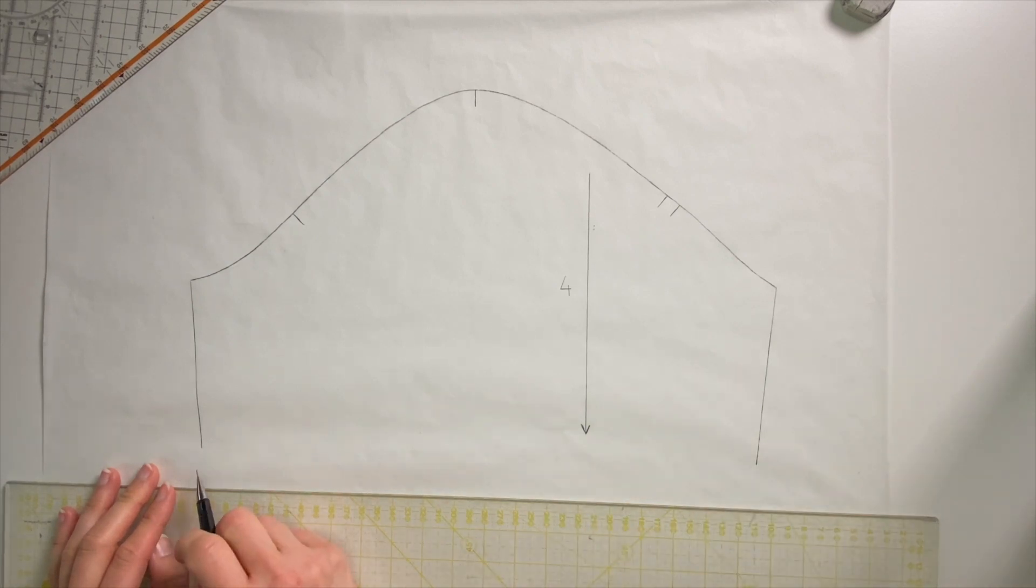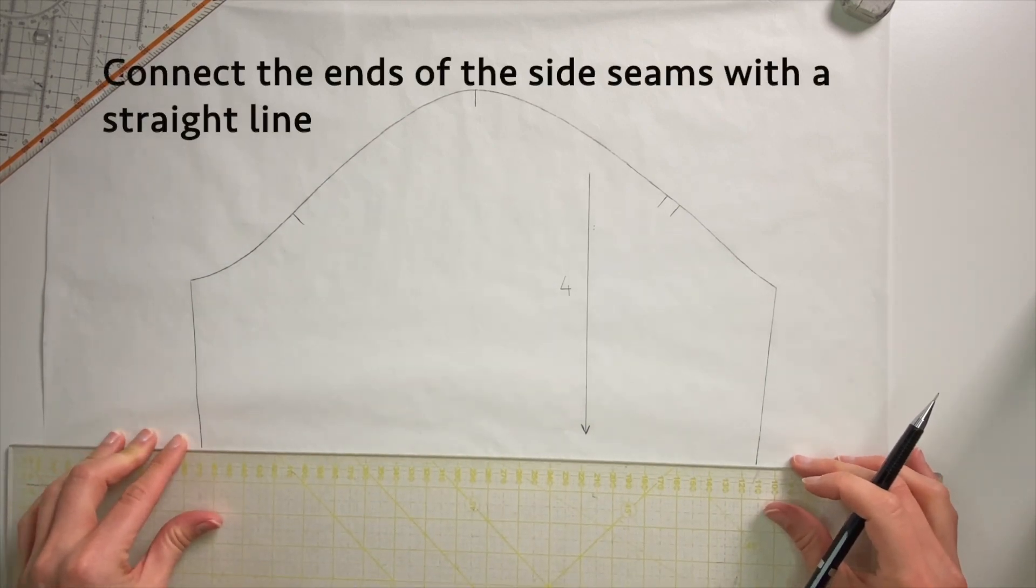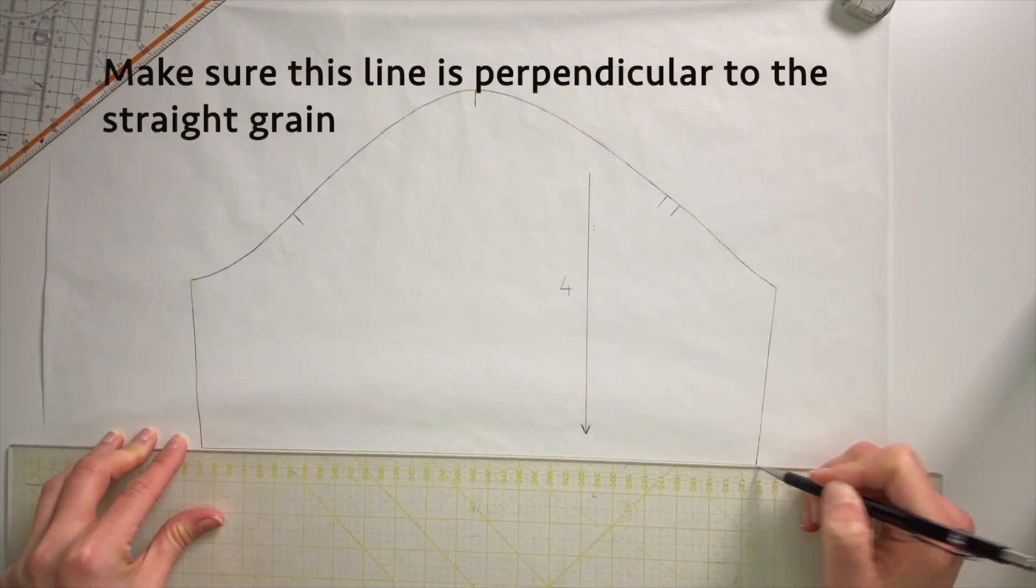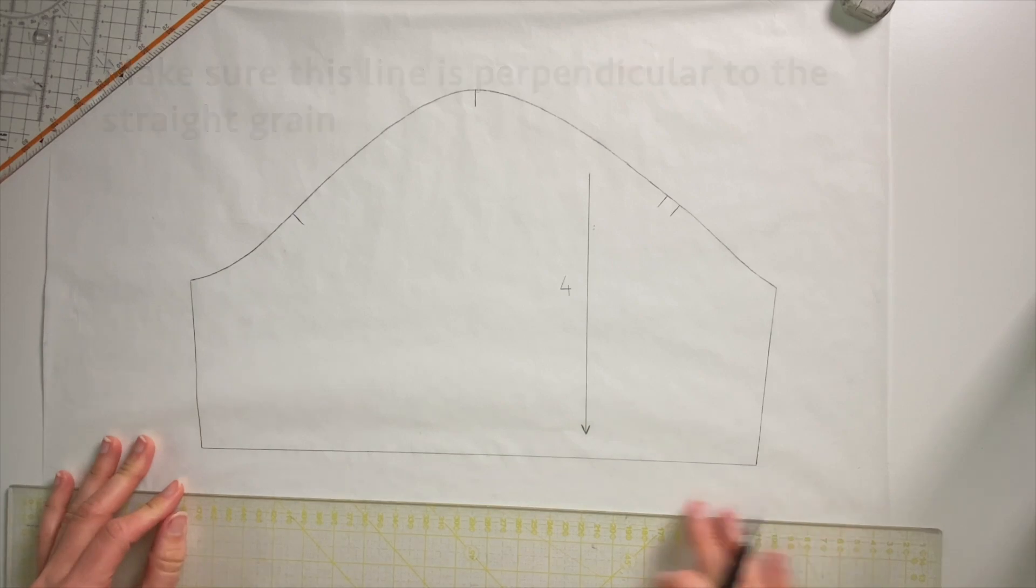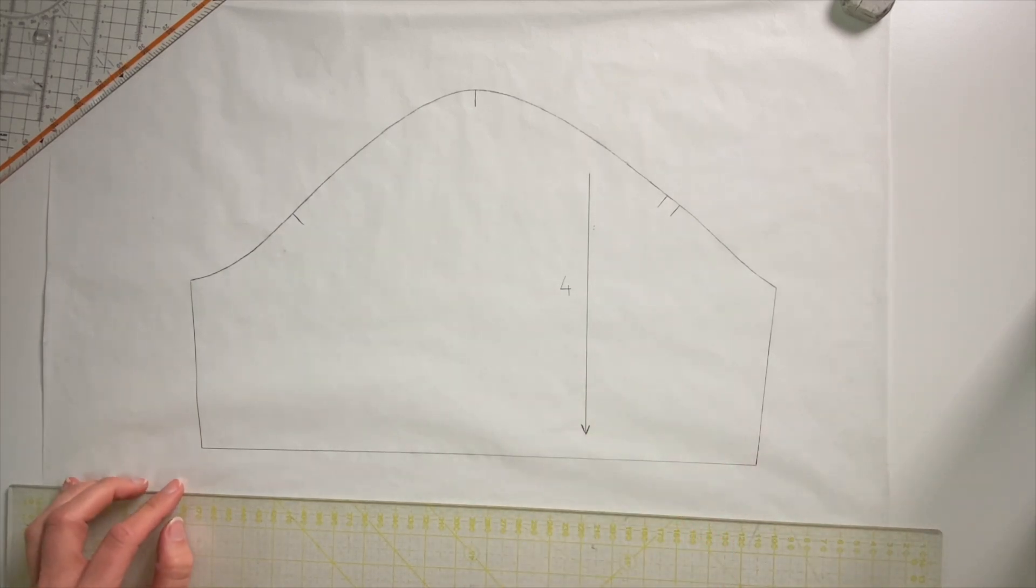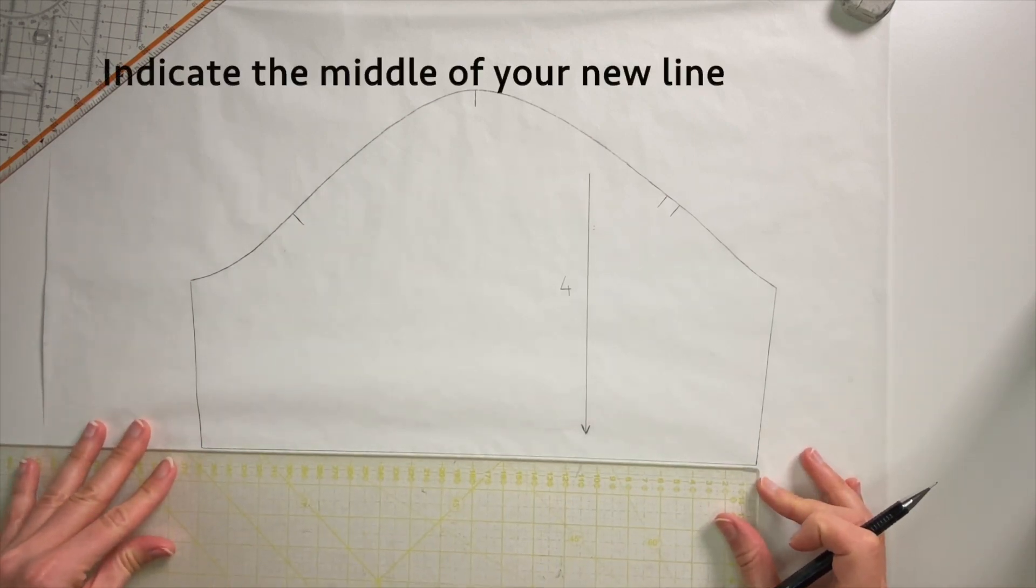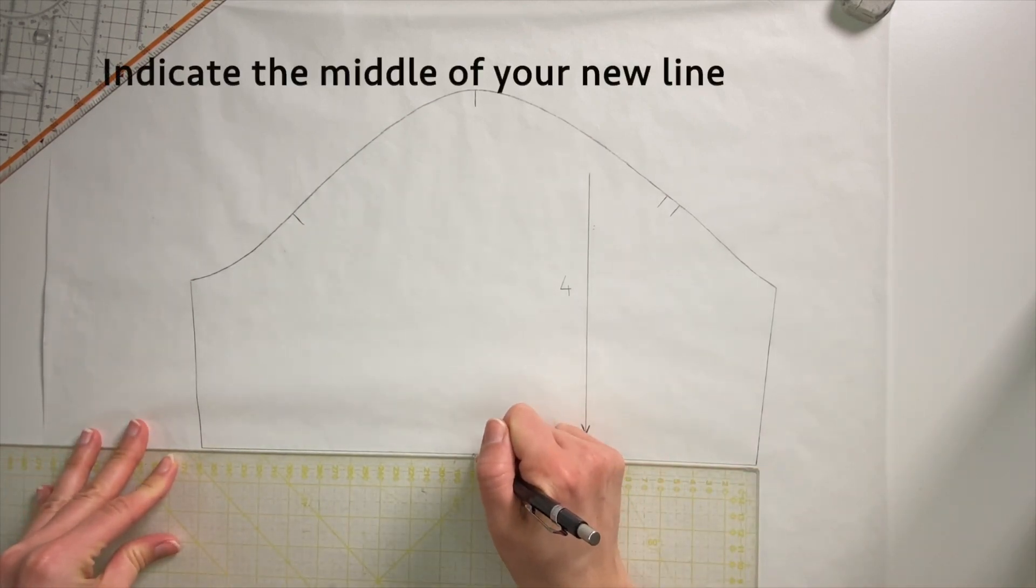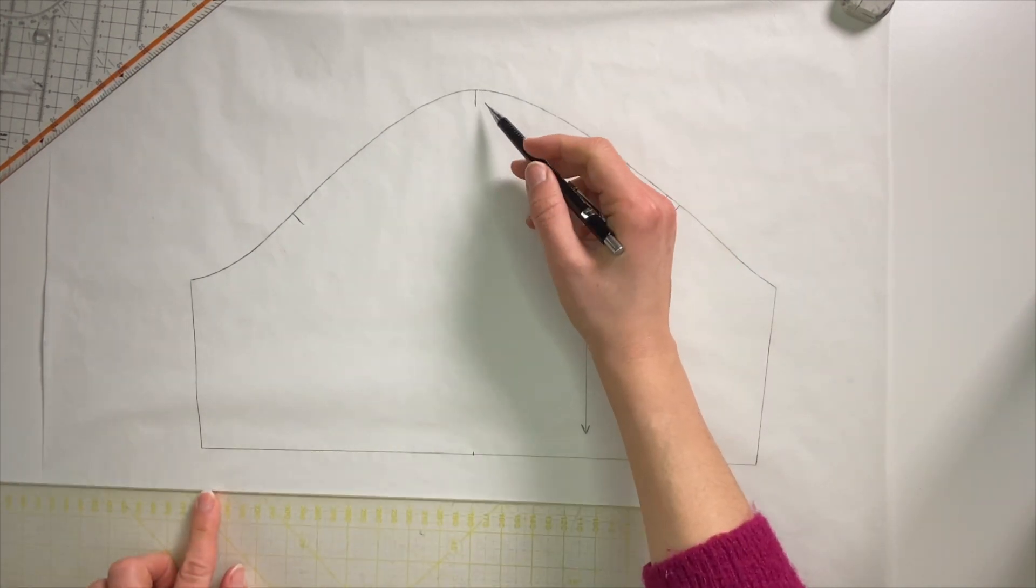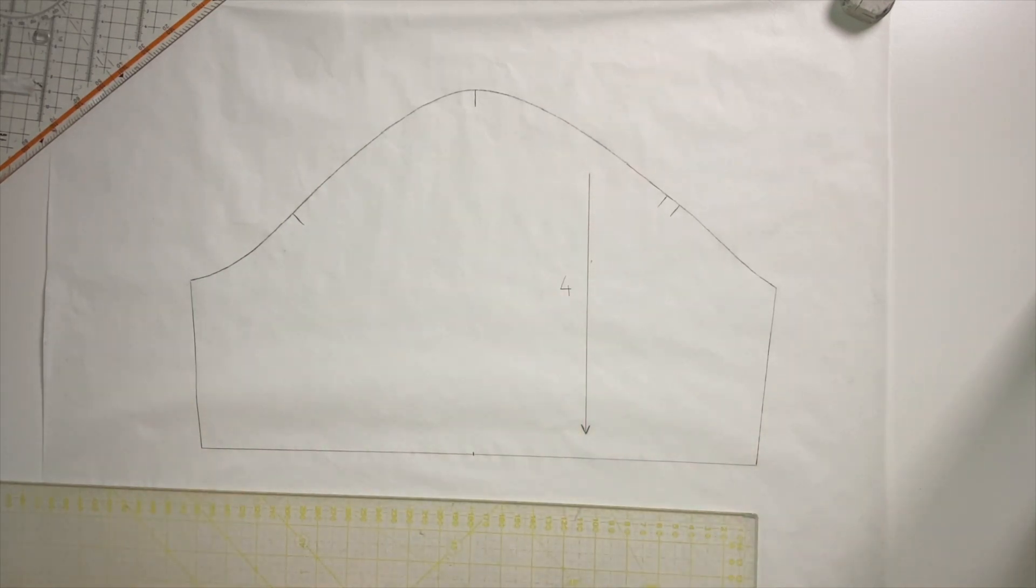So I'm going to start by drawing a straight line where the slightly rounded hem was. So you just connect the side seams. Make sure that this line is at a 90 degree angle from your straight grain. Then I'm going to look for the middle, so I'm going to measure it and indicate the middle. And then I'm going to draw a line from the sleeve head, perpendicular to this line, and it's going to be 60 centimeters long.